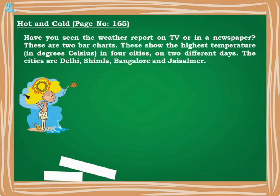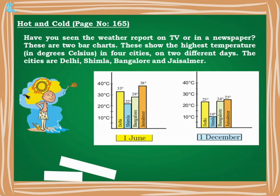Hot and Cold, Page 165. Have you seen the weather report on TV or in a newspaper? These are two bar charts showing the highest temperature in degrees Celsius in four cities — Delhi, Shimla, Bangalore, and Jaisalmer — on two different days. In school assemblies also, after the news you say the temperature.